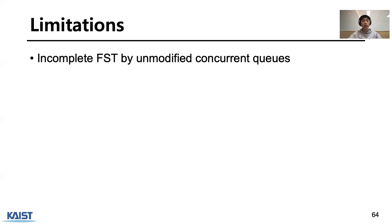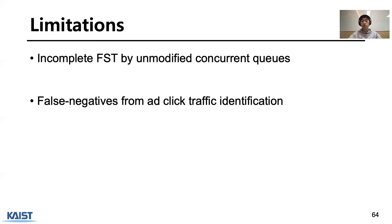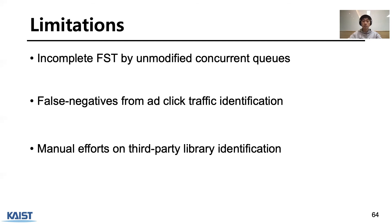There are three limitations for Fraudetective. First, there are five unmodified concurrent queues in our AOSP; when a developer uses these for their app, Fraudetective will produce an incomplete full Stacktrace. Second, we generalized ad click traffic patterns from manual investigation of major ad libraries; there may still exist different click URL patterns we did not capture, producing false negatives. Third, for library identification we observe third-party library package and class names; if ad library sources are unavailable online, we use class responsibility names to deduce the ad service name, and when class names are obfuscated, we find matching classes from other apps without obfuscation.